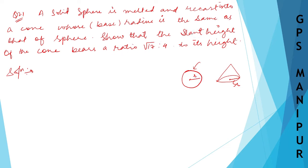We need to show that the slant height of the cone bears a ratio of root 17 to 4 to its height. So I need to prove that l by h — where l is the slant height — is equal to root 17 by 4. This is what I'm going to prove in this particular problem.